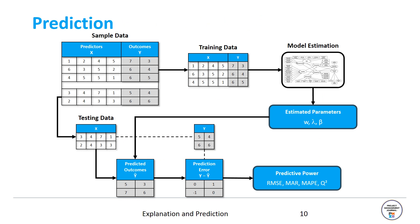To engage in prediction, we actually need to separate the data set into a training sample and a holdout sample. The holdout sample can also be referred to as the testing sample or testing data. Coming back to our initial example, we would not estimate the model based on our five observations, but we would simply take three observations out. The first three observations. This is now our training data. Using these training data as input, we would estimate the model and get our estimated parameters like the weights, the loadings and the path coefficients.